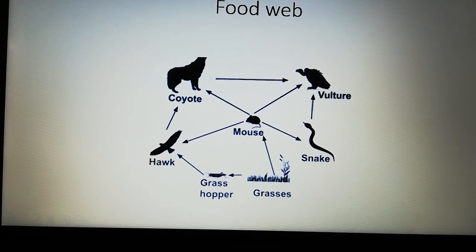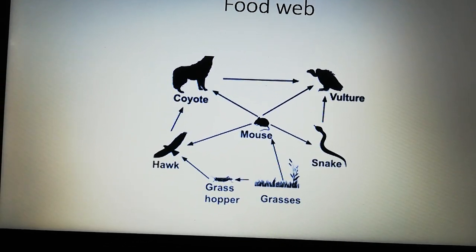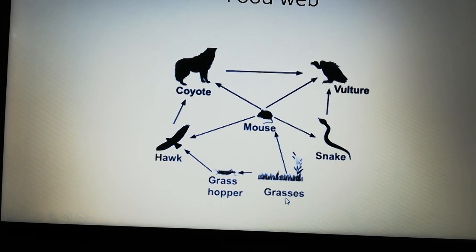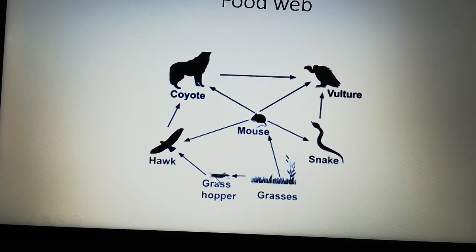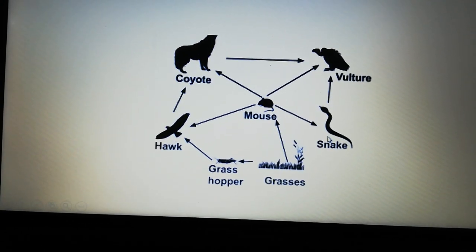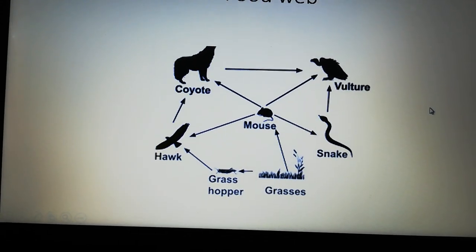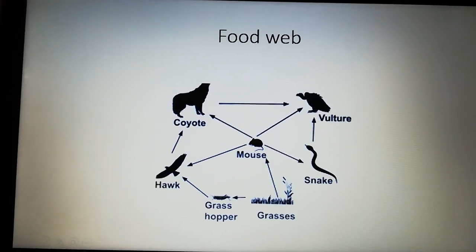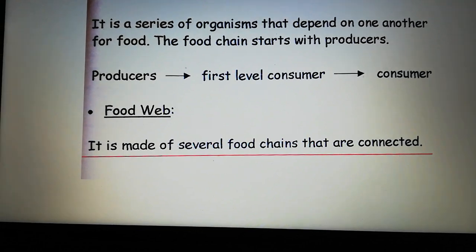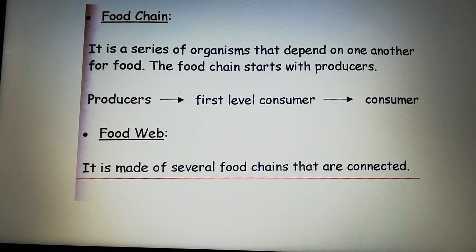A group of food chains together form the food web. Always we start with the plants, because they are the producers. For example: grass is eaten by the mouse, and the mouse is eaten by the hawk — that's one food chain. Another: grass, grasshopper, hawk. Another: grass, mouse, snake. Or grass, mouse, snake, vulture. So a food web is made of several food chains connected together, and it shows us how living organisms depend on one another to get their own food.